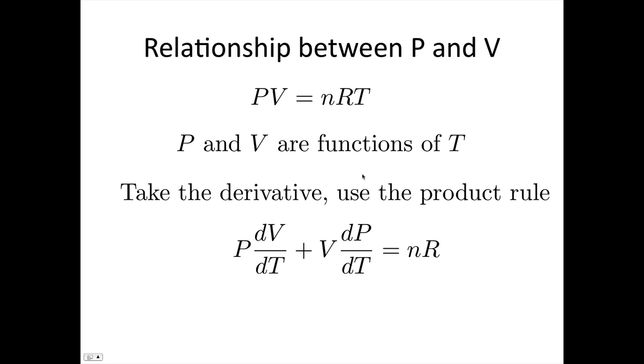So this is our derivative here. Now what we'll do is we'll just multiply all the sides by dT to simplify it a little bit. So we've got P dV plus V dP is equal to nR dT.